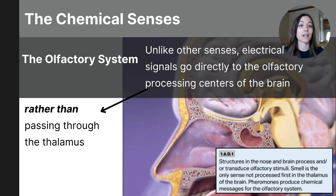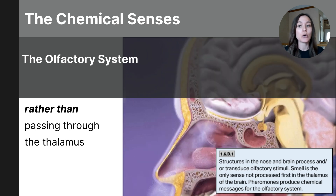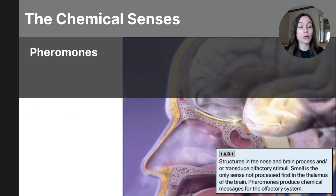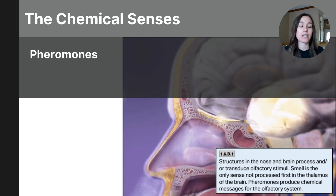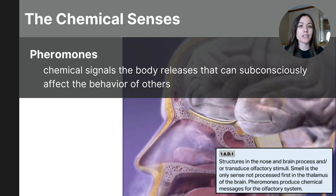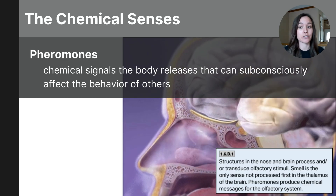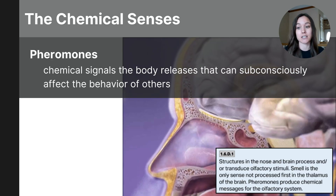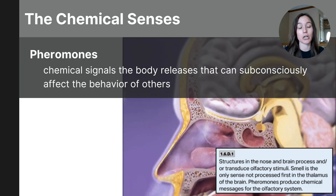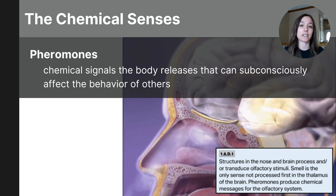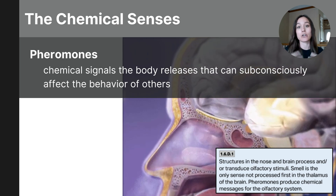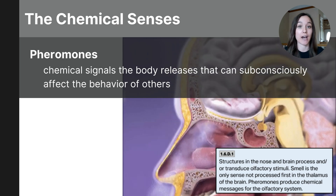This direct pathway allows for faster, more immediate processing of smell, which can trigger strong emotional memories and emotional responses. Pheromones are a key concept in understanding smell. These are chemical signals released by animals, including humans. Pheromones can subconsciously affect the behavior and physical states of others in the same species. They play a role in communication like mating, social interaction, and territorial marking. Pheromones are detected by the vomeronasal organ in the nasal cavity, and this can influence behavior and hormonal responses without our direct awareness.